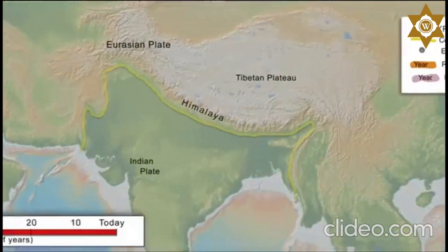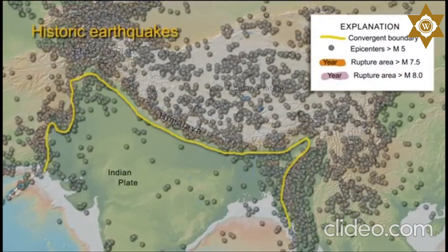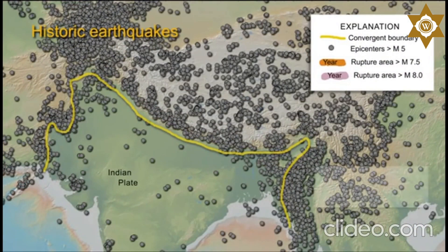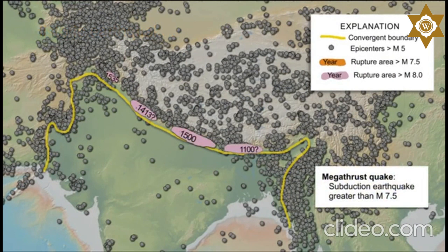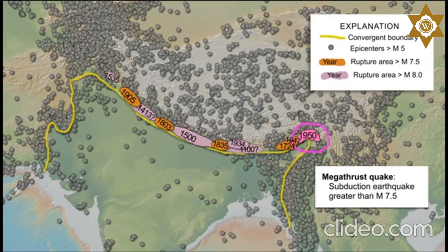Regional compression produces broadly distributed earthquakes north of the 2,900 kilometer Himalayan plate boundary. However, the historical earthquake record indicates that the largest earthquakes, shown by their rupture areas, occur on the shallow portion of the megathrust boundary. The magnitude 8.6 Assam-Tibet event in 1950 was the 10th largest earthquake of the 20th century.